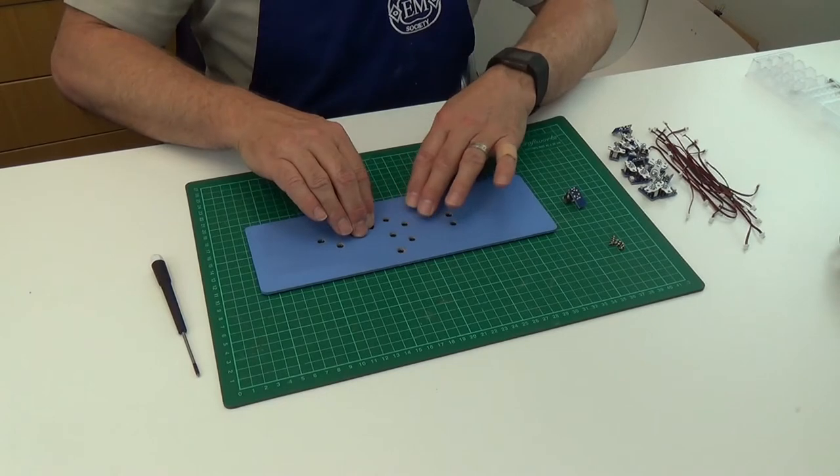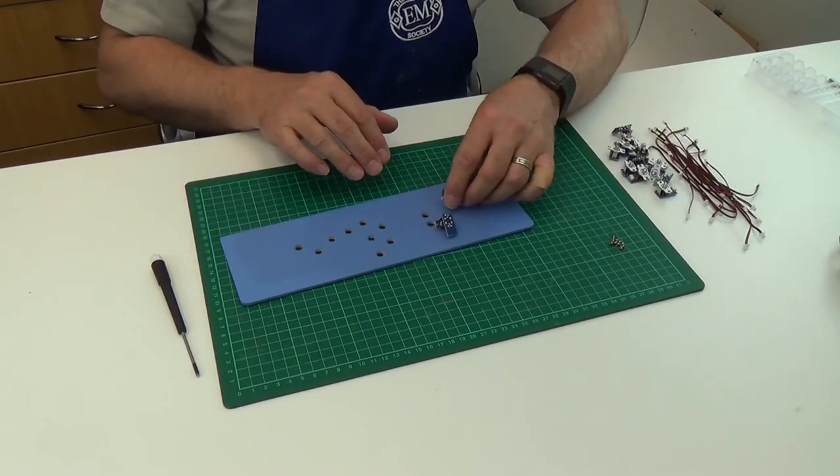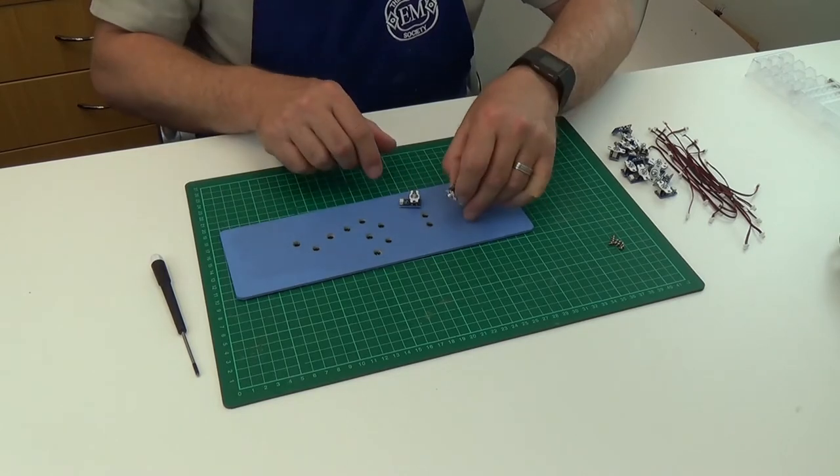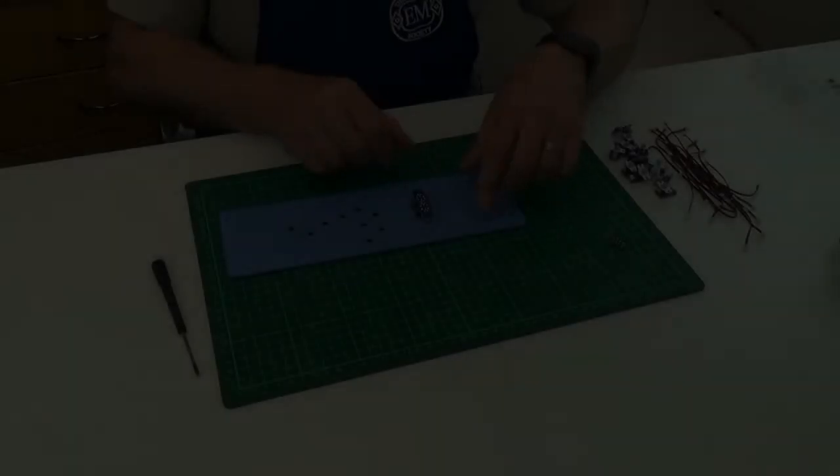Turn the panel over and start offering up the switches to the bezels. You can see here why leaving enough space is important. It doesn't matter about the orientation of the switches and they can be rotated round to fit.